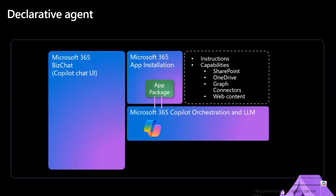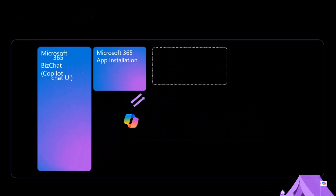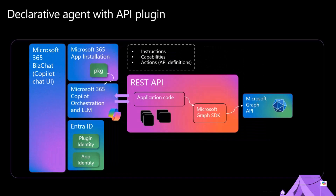The architecture is pretty simple. The bright colored parts are what you get with Microsoft 365 Copilot. All you have to supply is the instructions and capabilities — you can point it to SharePoint, OneDrive, graph connectors, web content, and more is coming. Watch this space at Ignite. If you add an API, you're adding what we call actions, which requires an API plugin file — essentially a Swagger file with additional details to tell Copilot exactly how to call that API on the user's behalf.